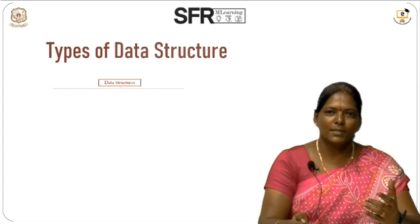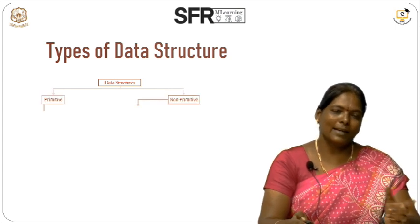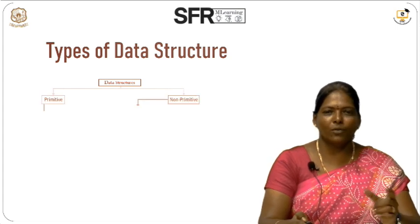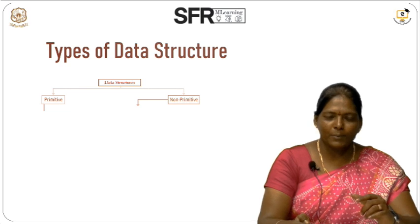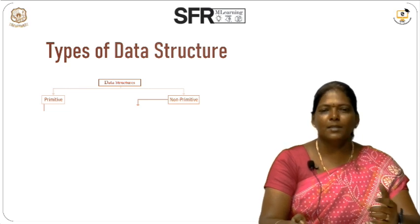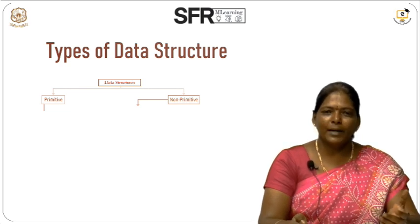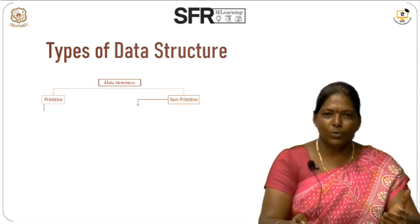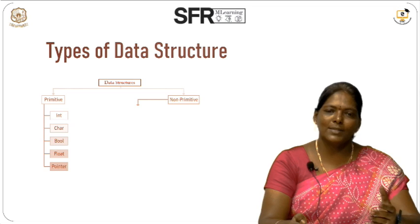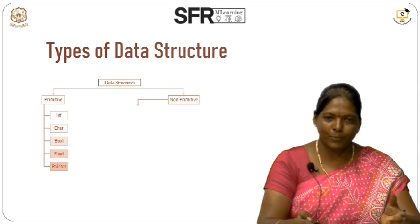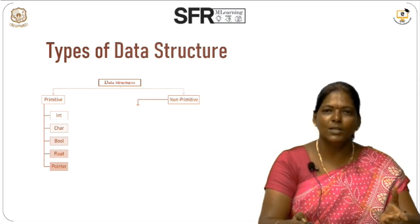Data structures are mainly of two types: primitive and non-primitive data types. Primitive data types we all know — integer, float, and so on — we use these in our programming languages.